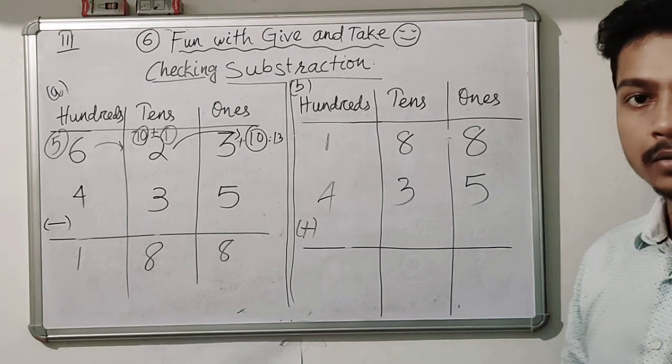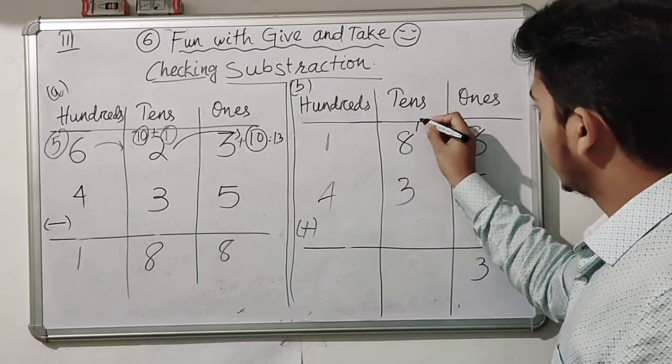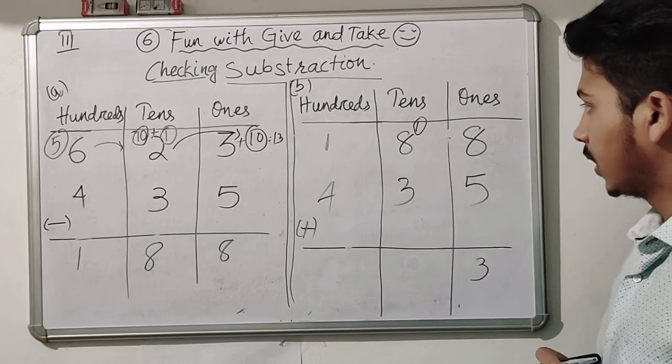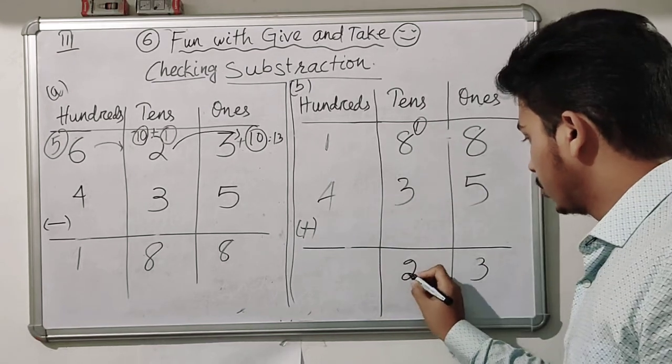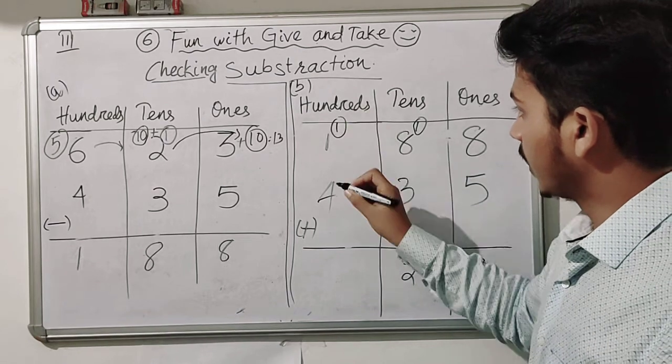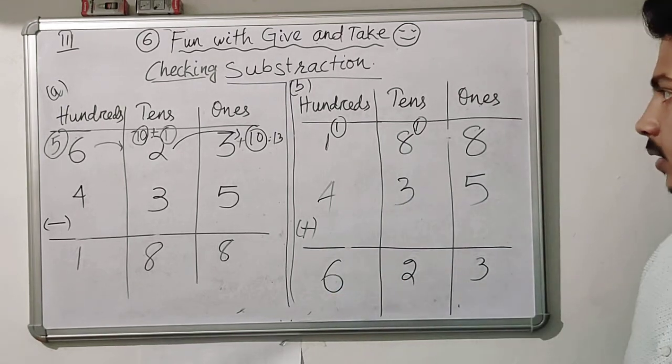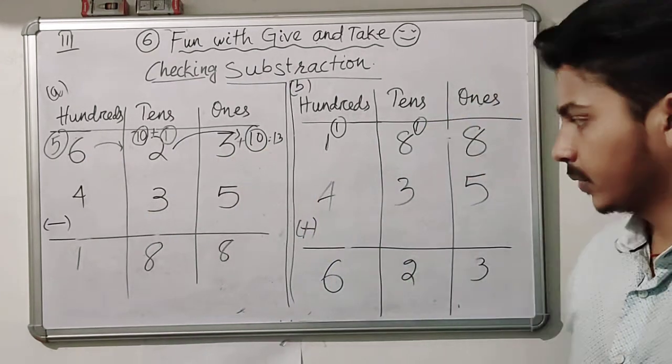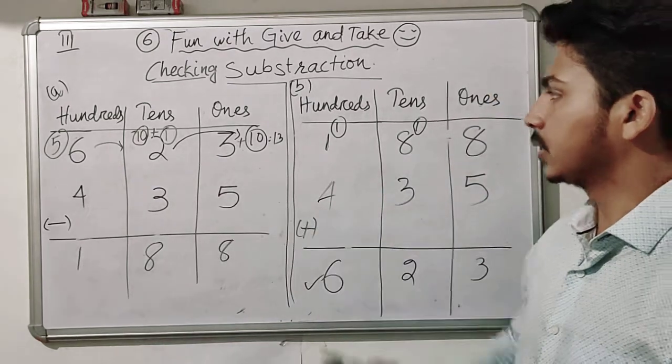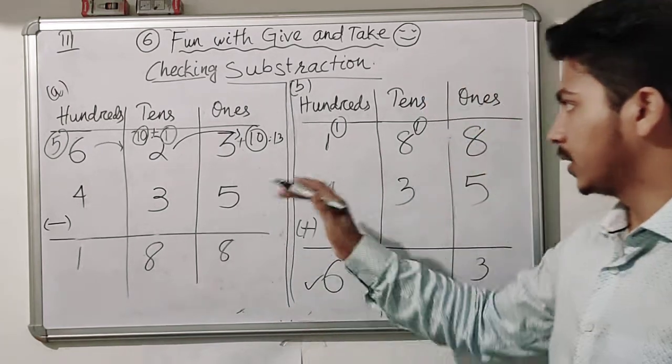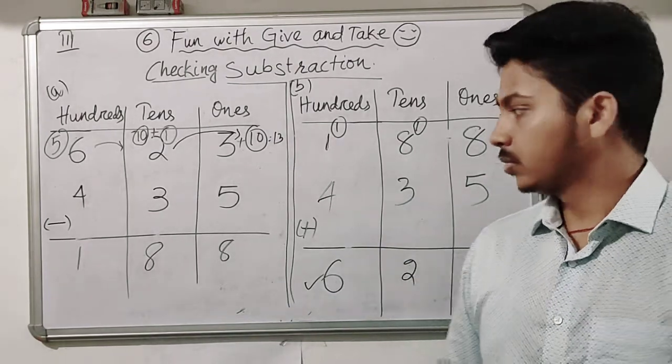Eight plus five equals thirteen, so three here and one carries over. Eight plus three equals eleven, plus one equals twelve, so two here and one carries. One plus four equals five, plus one equals six. The answer is 623. This number is the same as the first number, so we can say this subtraction is correct. I hope you understand this technique. Thank you, dear students.